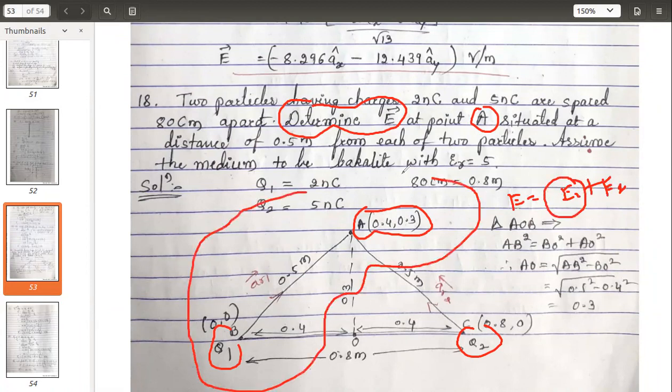So let's first find what is E1. E1 is the field due to the charge q1. The two coordinates are known to you, the distance between them is known to you.